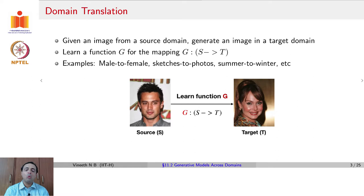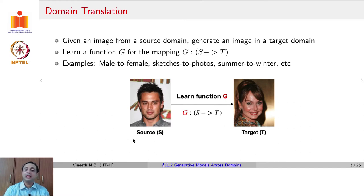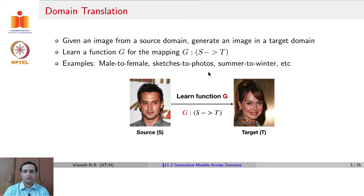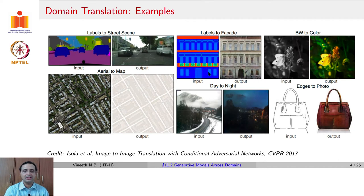With that, let us move on to the use of GANs for generation across domains, a task known as domain translation. The goal here is: given an image from a source domain, we would like to generate an image in a target domain. We would like to learn this function G that takes us from source to target. You could look at this as a variant of GANs where the input is not a noise vector but a source domain image. Examples of use cases could be to take a male image to change it to female, to go from sketches to photos, to take a scene and transform a summer scene to winter, and so on.